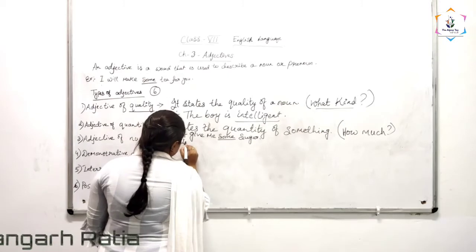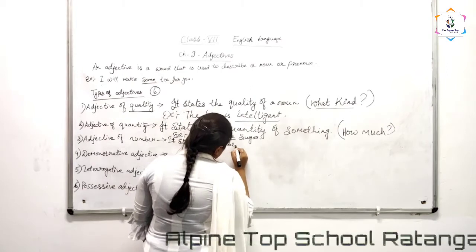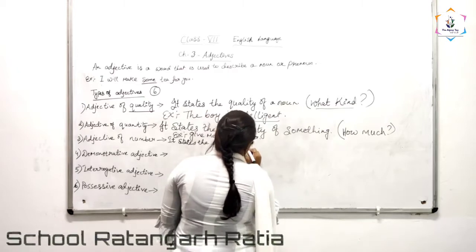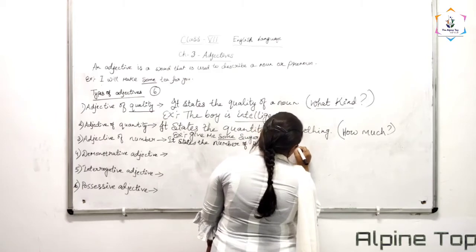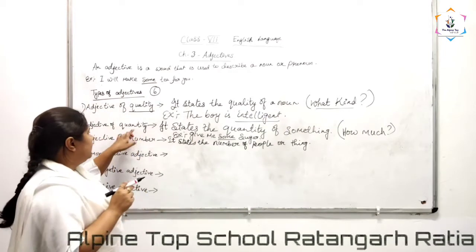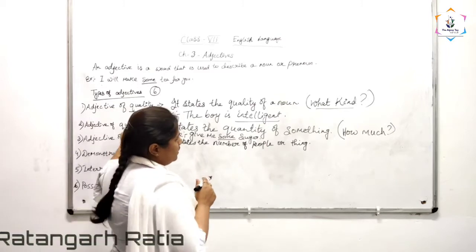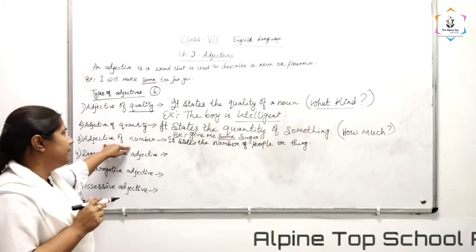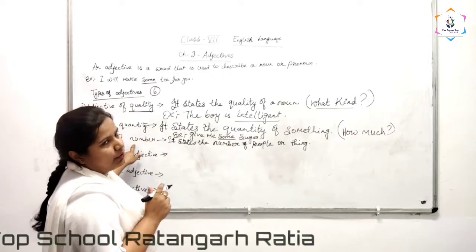It states the number of people or things. Adjective of quantity is uncountable and adjective of number is countable. Always remember that. Adjective of quantity is uncountable and adjective of number is countable.